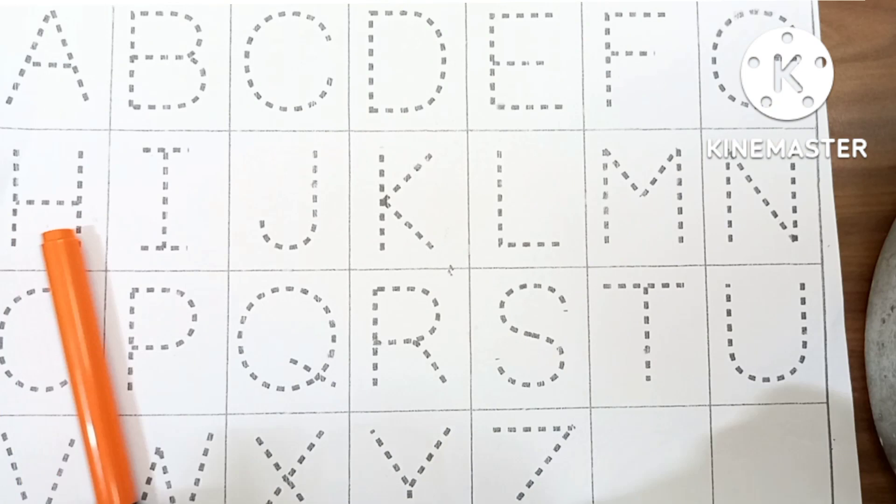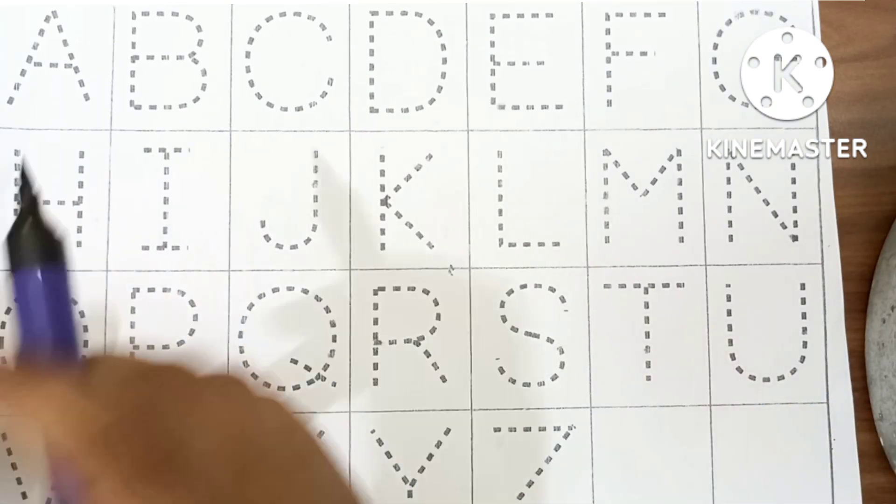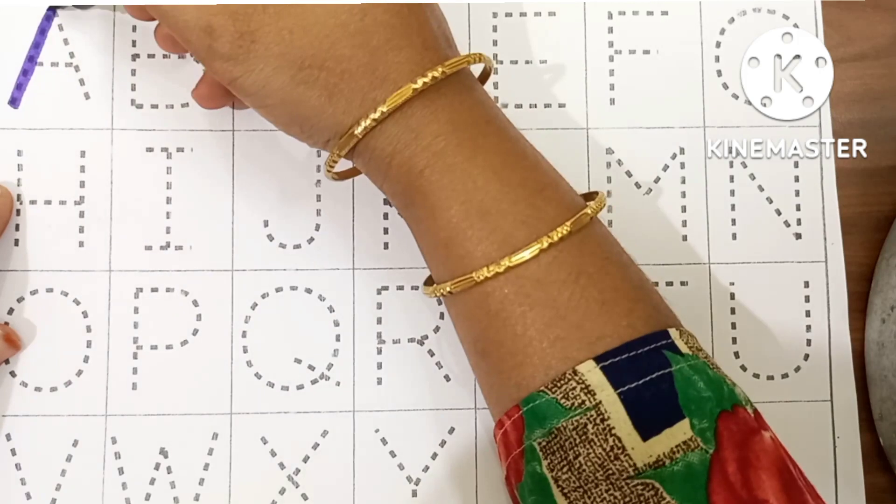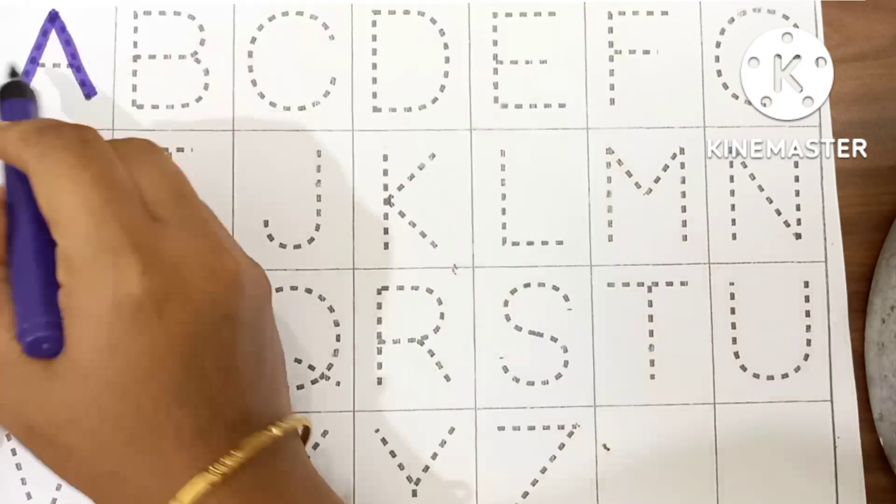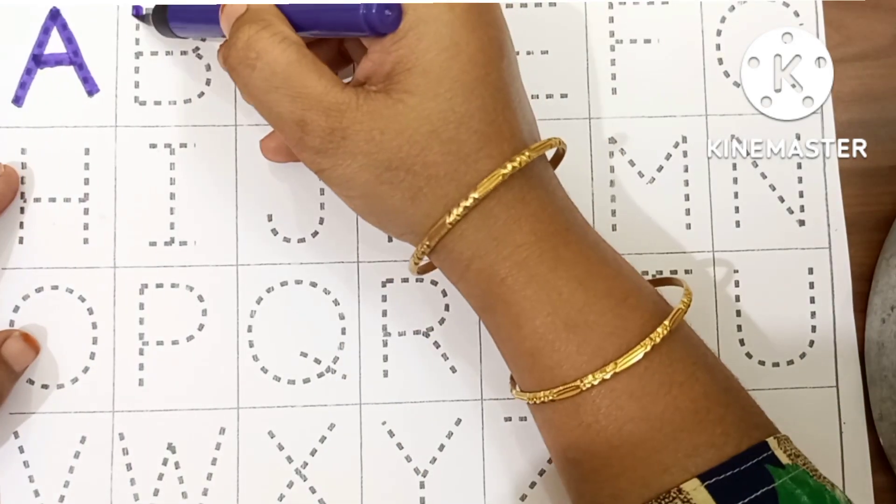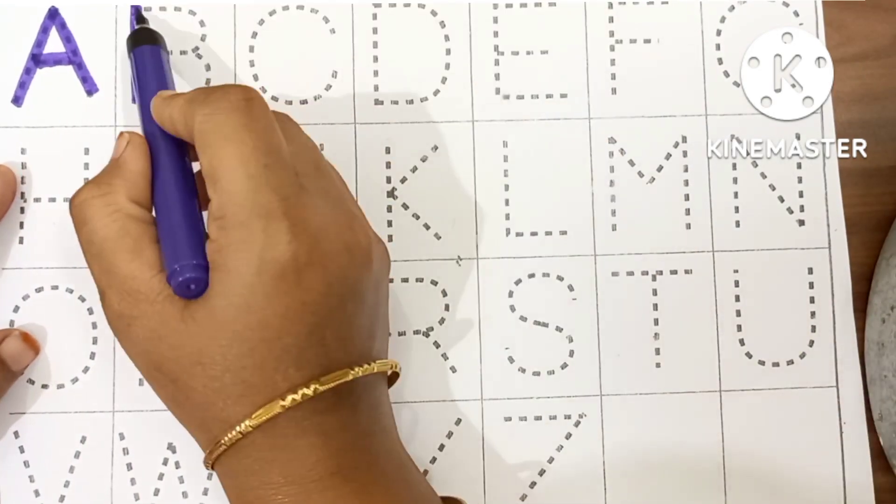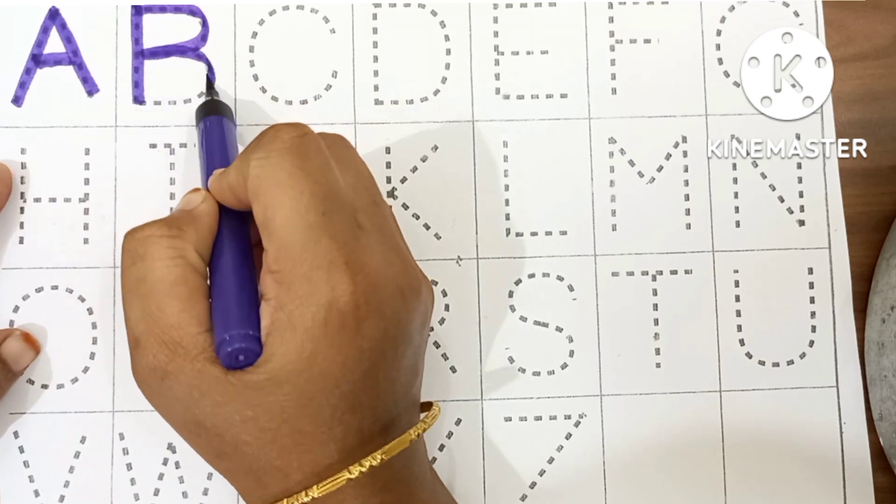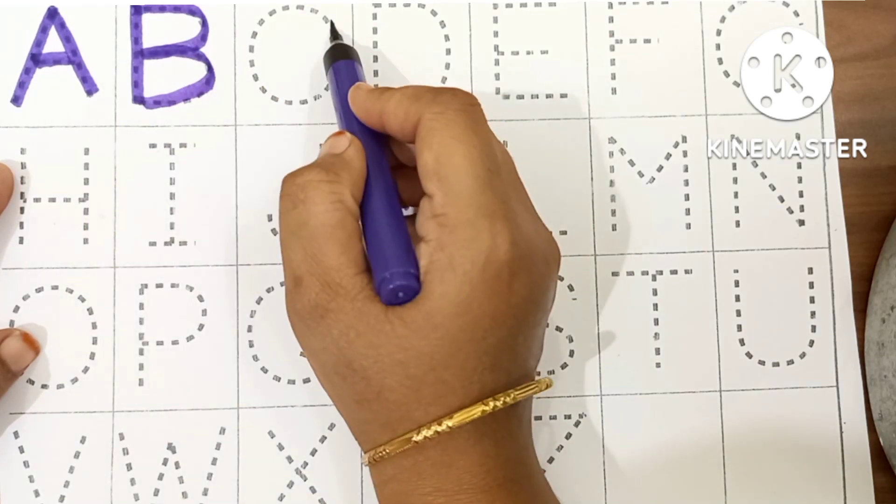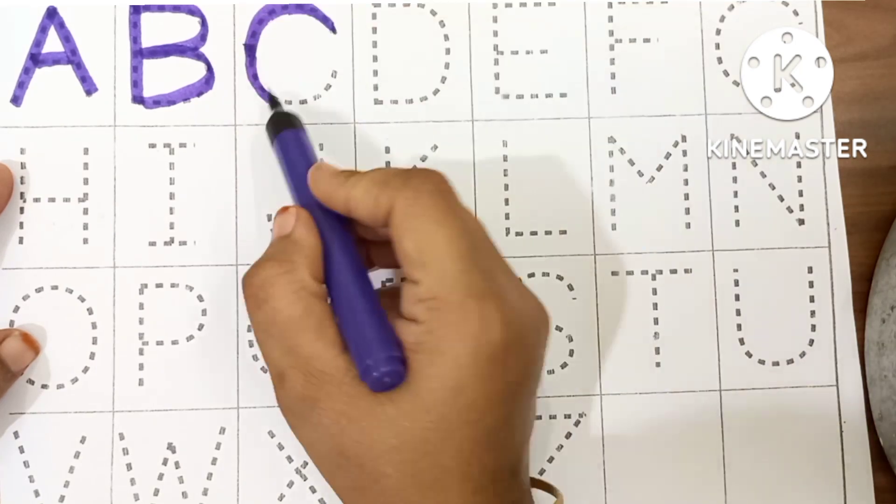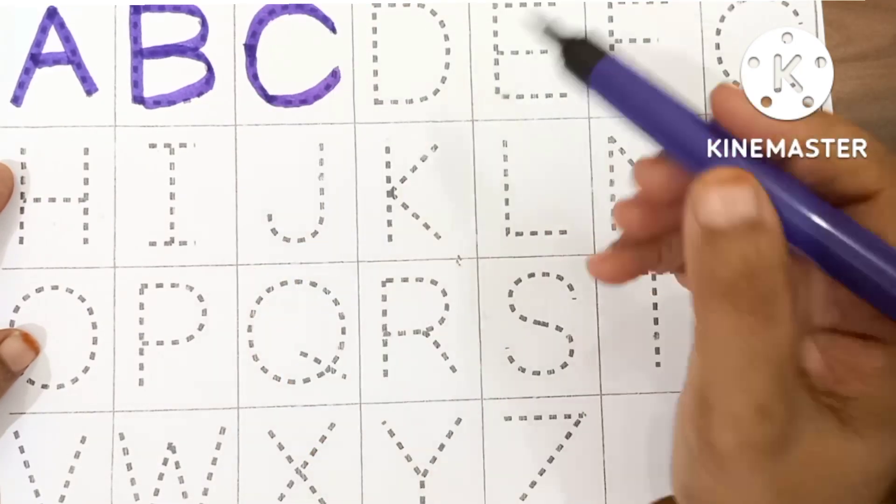Capital letters, uppercase. A. A for Apple. B. B for Ball. C. C for Cat.